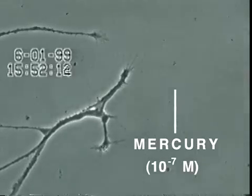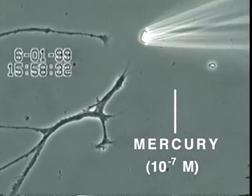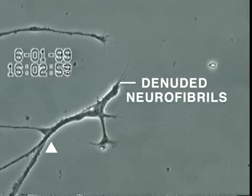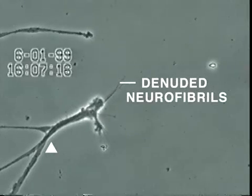Over the next 30 minutes, the neurite membrane underwent rapid degeneration, leaving behind the denuded neurofibrils seen here.